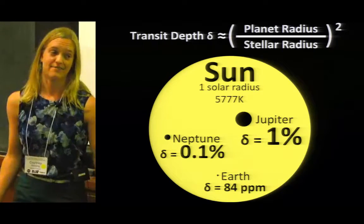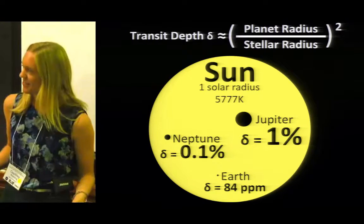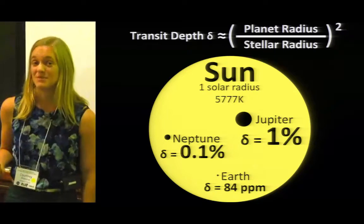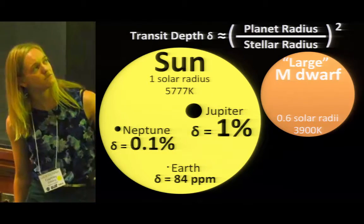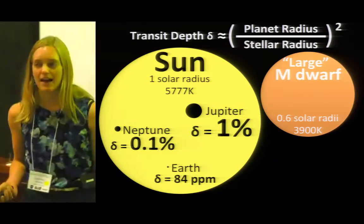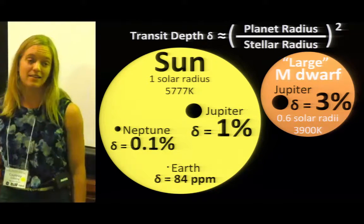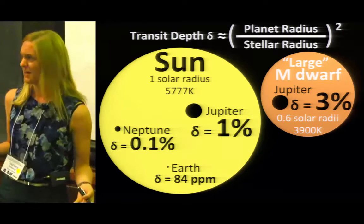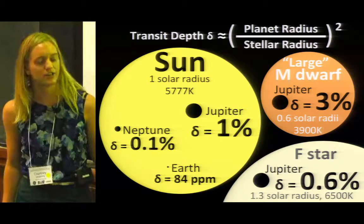This is terrifying if you're trying to find Earth-like planets in the galaxy. But fortunately, we have an escape route. We can look at different types of stars. So let's say we're going to put the Sun to the side, pull up a large early M dwarf, and in that case for a Jupiter-sized planet, we get a 3% transit depth. If we decide that actually we like bigger stars more, we could look at an F star and see about 0.5% transit depth.